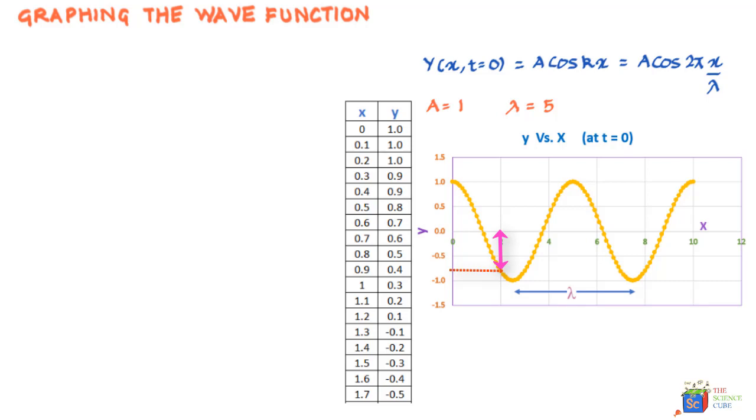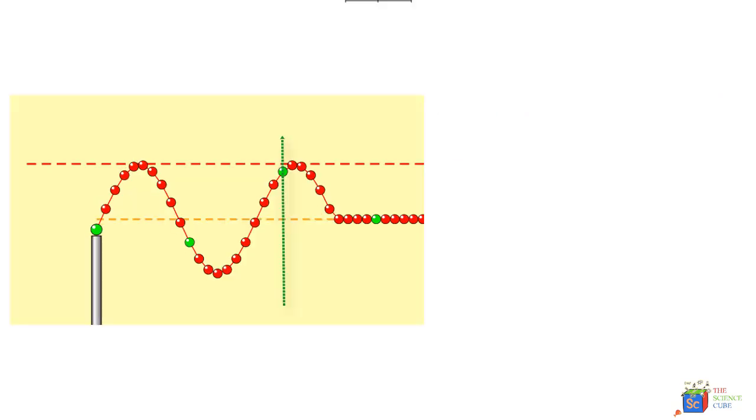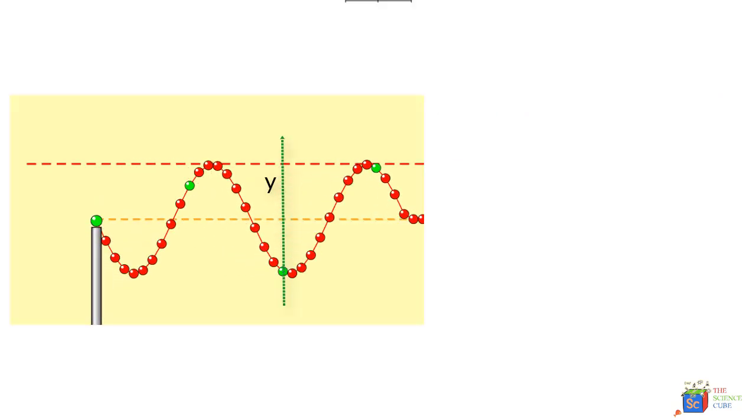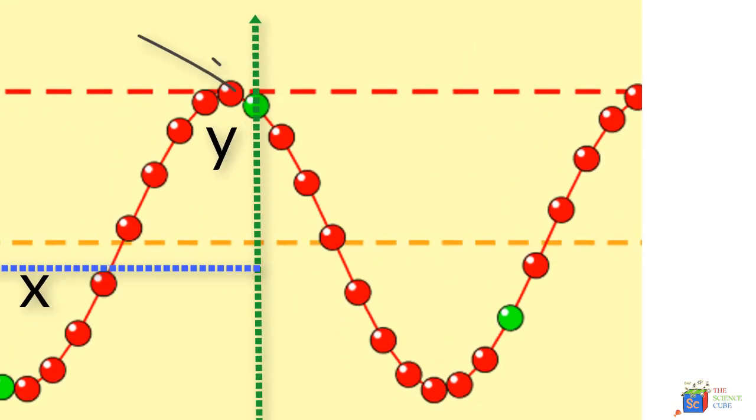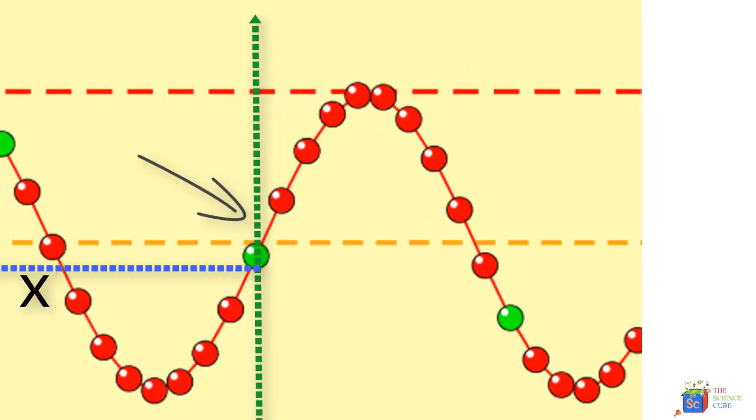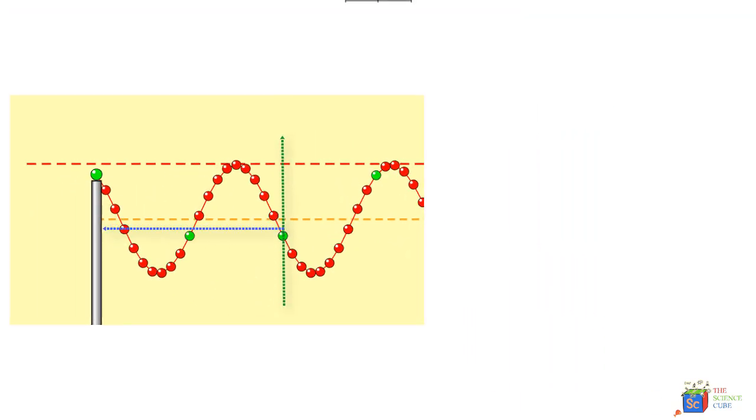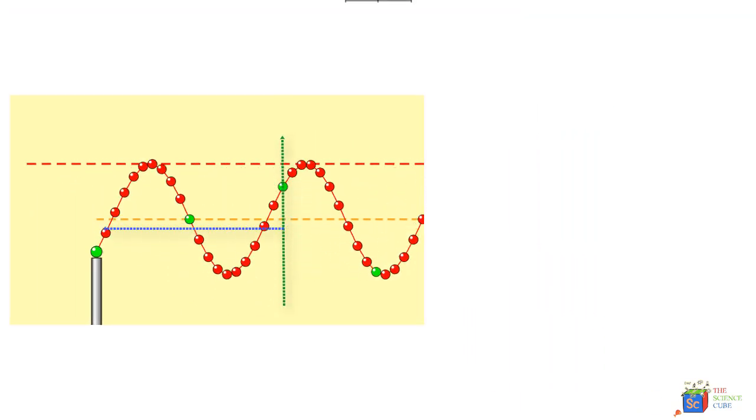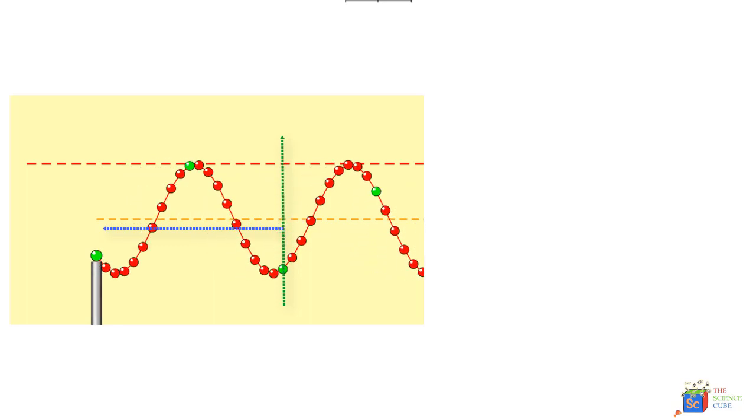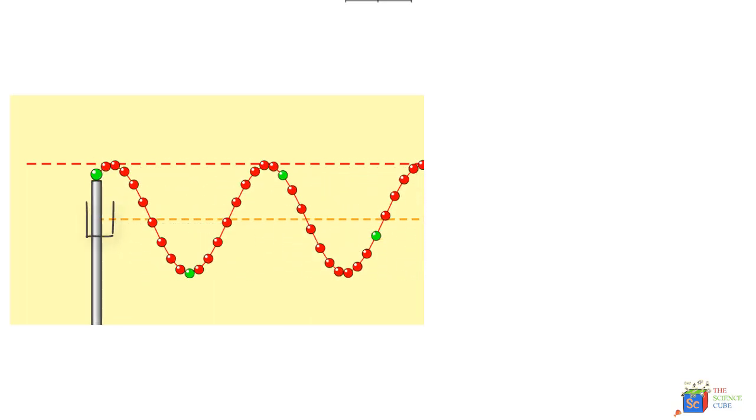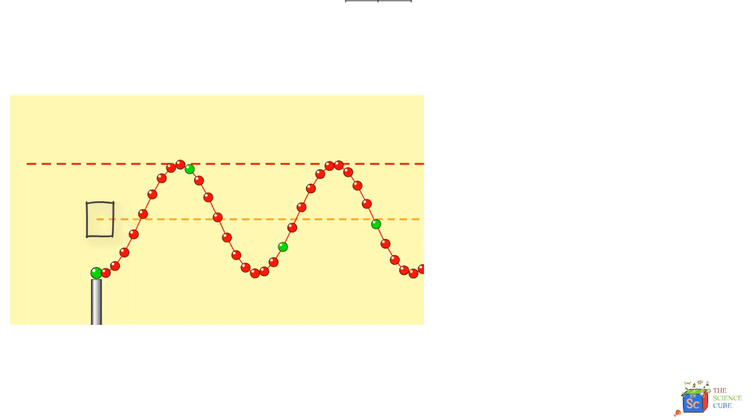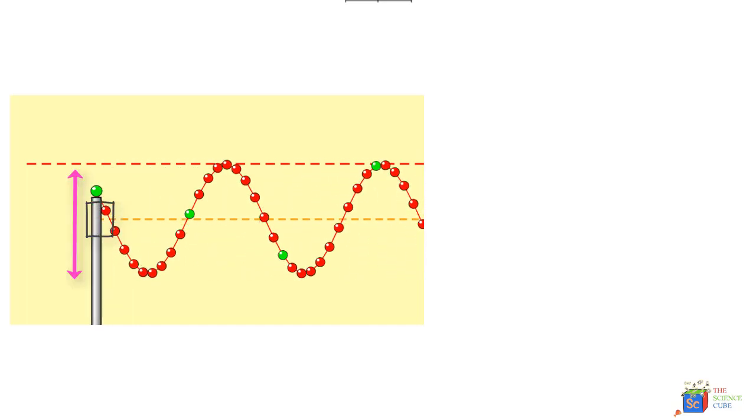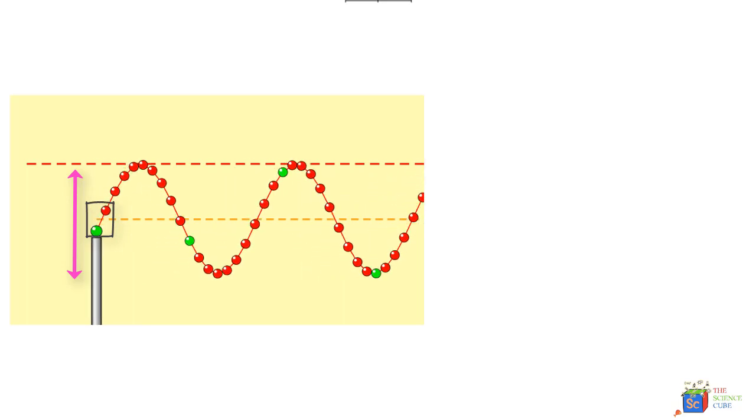So at x equal to zero you can see y is equal to one, which is the amplitude also. And at x equal to 0.5, y is about 0.8, or rather more accurately 0.81. And at x is equal to 2, y is equal to minus 0.81, and so on and so forth. Well, we can also graph the same string for y versus time t keeping x constant.